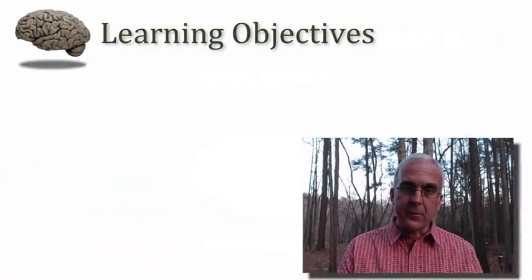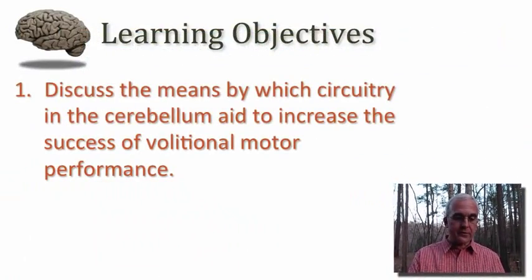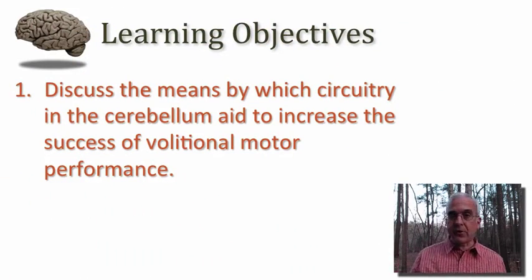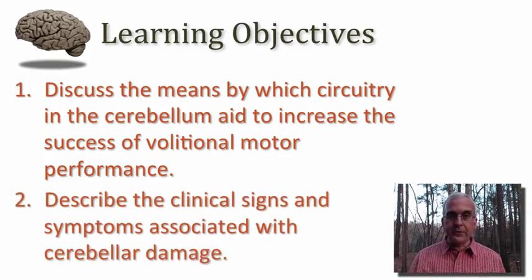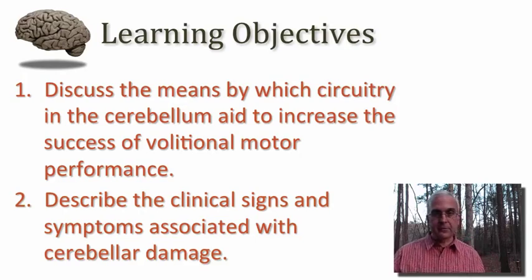Welcome back to part 3 of this tutorial on the cerebellum. My learning objectives are that you would discuss the means by which circuitry in the cerebellum aids to increase the success of volitional motor performance, and that you be able to describe the clinical signs and symptoms associated with cerebellar damage.